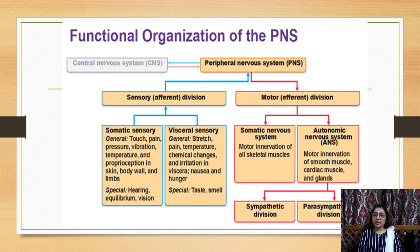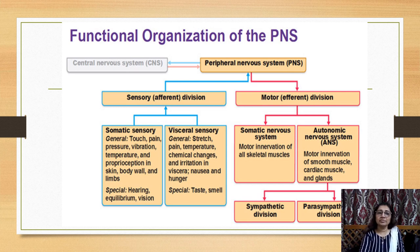In the motor or efferent division, there are somatic and autonomic subdivisions. The somatic division provides motor innervation to all skeletal muscles. The autonomic nervous system contains motor innervation of smooth muscle, cardiac muscle, and glands. The autonomic nervous system can be further divided into the sympathetic division and the parasympathetic division.